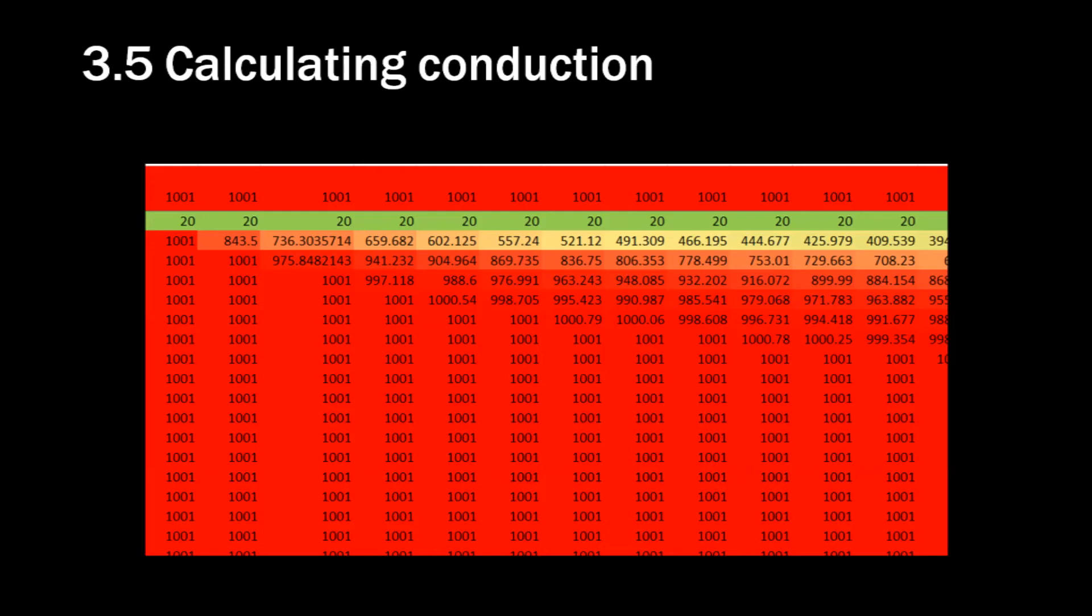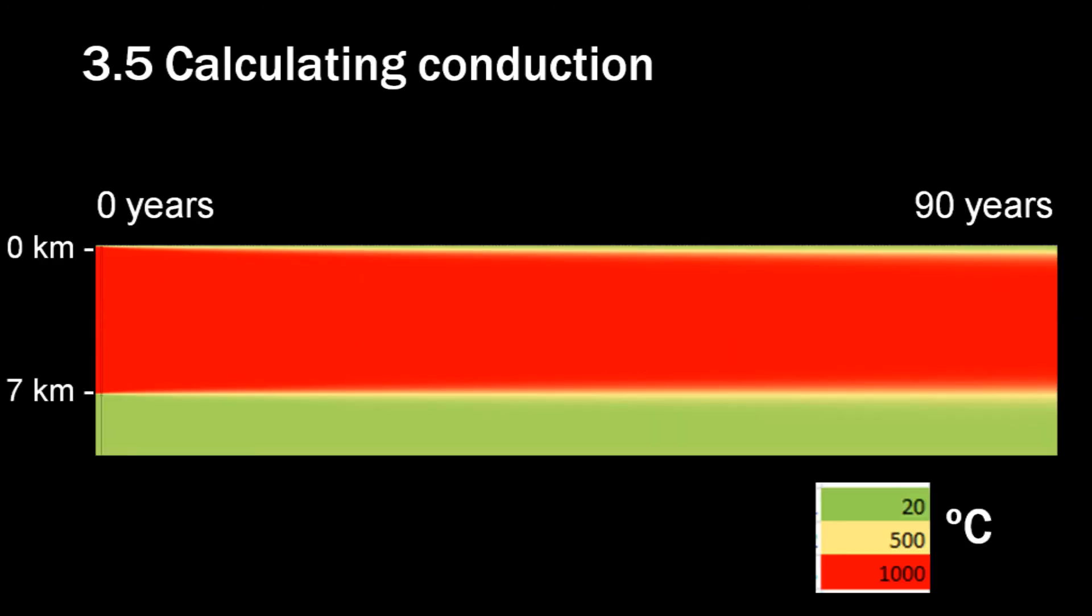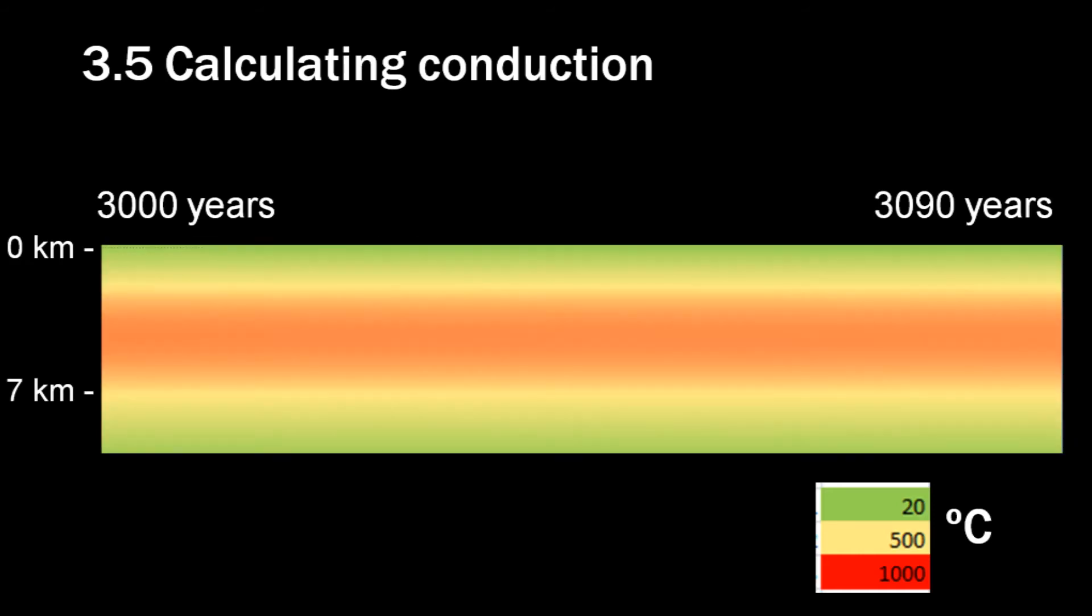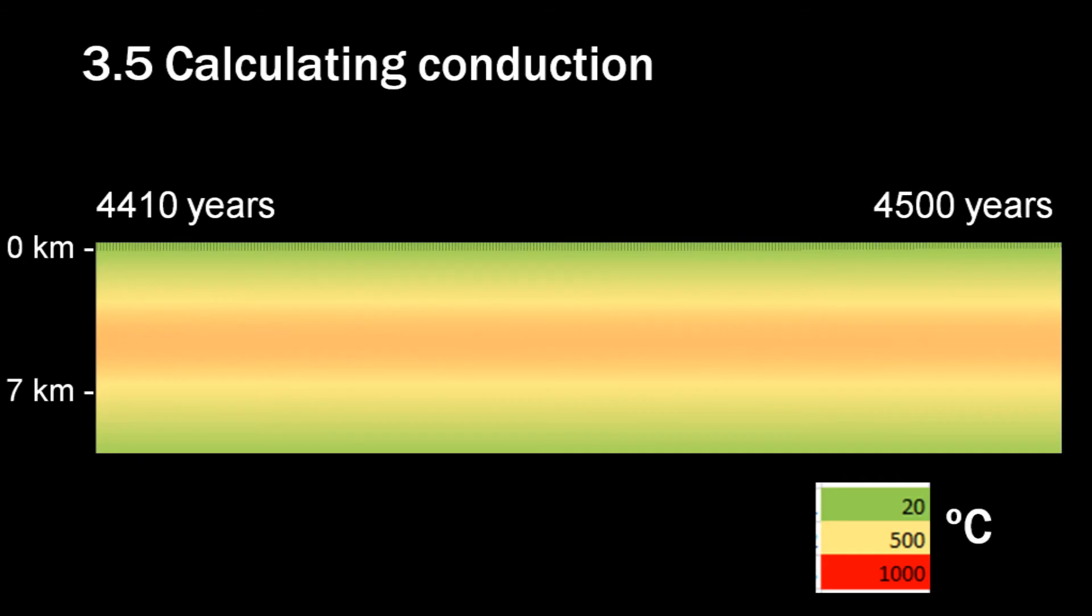So we start with a lot of layers that are 1000 degrees Celsius each, except for the top layer, which is a room temperature. Remember, there is water on top, which consumes a lot of heat. The layers are 50 meters thick each, and we are using a time interval of about 100 days to calculate the conductivity step by step. We represent the temperature with colors. Red is 1000 degrees Celsius, yellow is 500, and green is 20. Here we display a layer of 7 kilometers thick. This is what it looks like after 90 years, 1000 years, 2000 years, 3000 years, 4000 years, and let's stop at 4500 years.